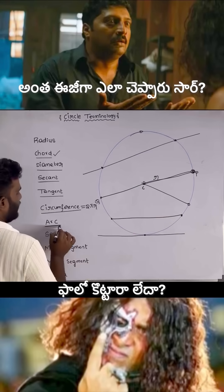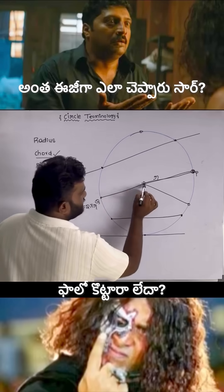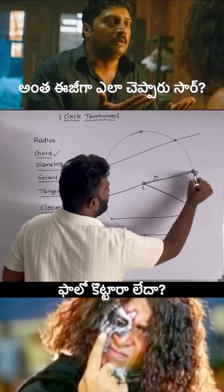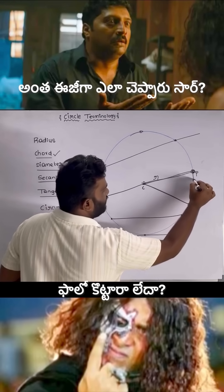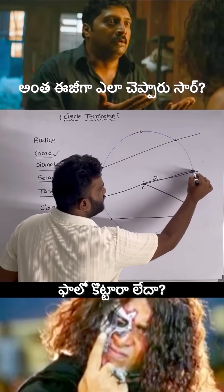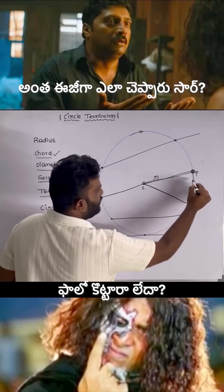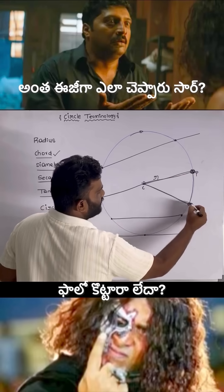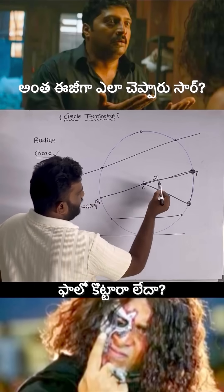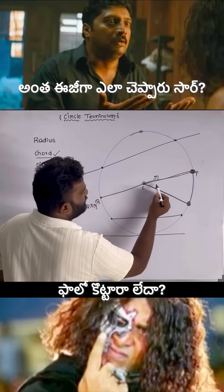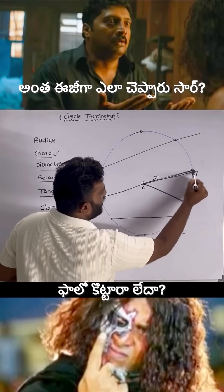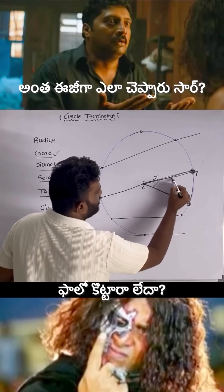What is an arc? When two lines are drawn from the center, a part of the circumference between them is known as an arc. The area surrounded by these two lines and the arc is called a sector.